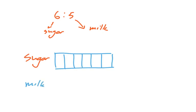And the milk would have just 5 boxes. So that would look something like this. Okay, cool. So we've kept our ratio at 6 to 5, 6 boxes for sugar, and 5 boxes for milk.